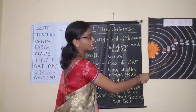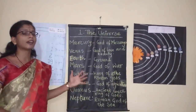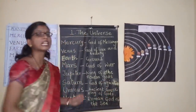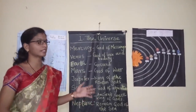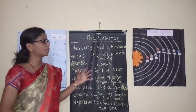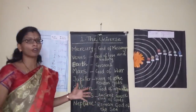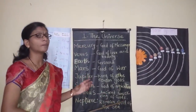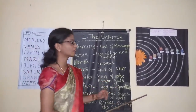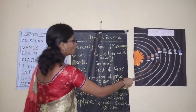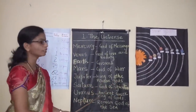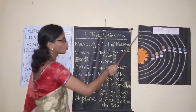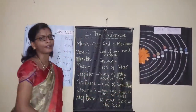The fifth planet is Jupiter. Jupiter is the largest planet in the solar system. It is a ball of gases and its diameter is 11 times bigger than the earth. Jupiter is known as the king of the Roman gods. It takes 12 years to complete one revolution around the sun.